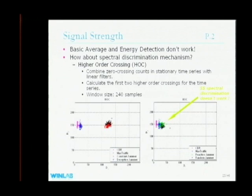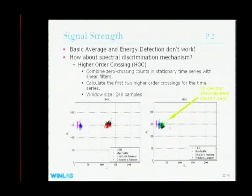But what about the other two jammers — reactive and random? Their data falls inside the normal scenario traffic, which means we cannot use signal strength spectrum discrimination to differentiate them. This is not surprising: the reactive jammer doesn't change the underlying traffic pattern at all. So no matter how sophisticated the spectrum discrimination technique, you still cannot detect the reactive jammer this way.